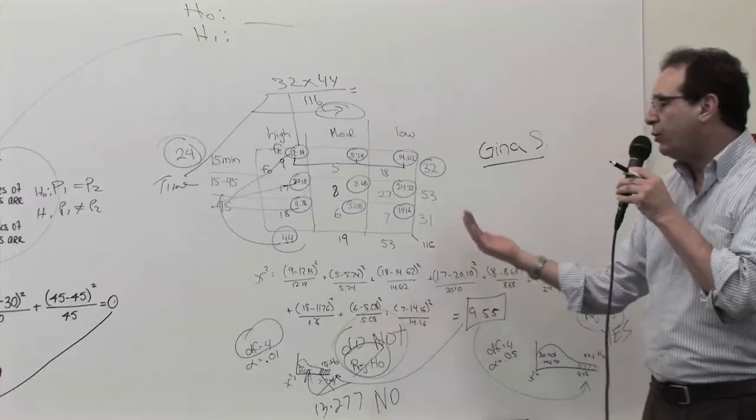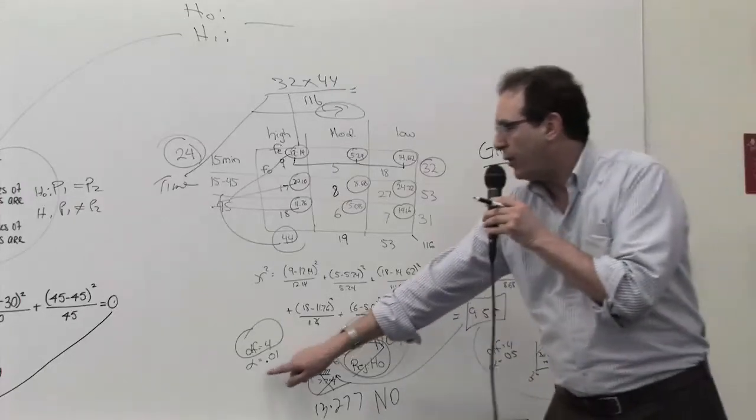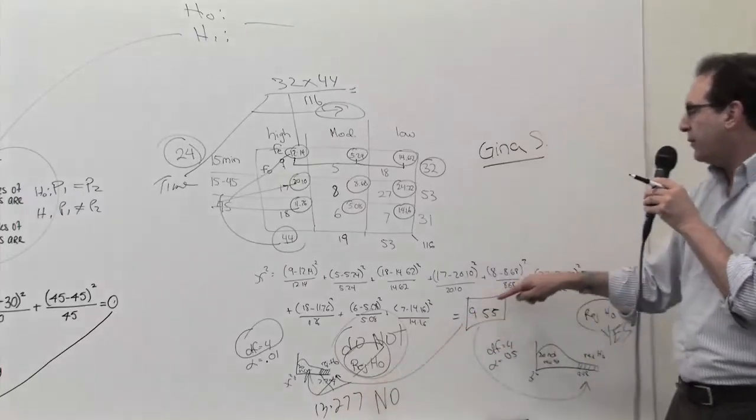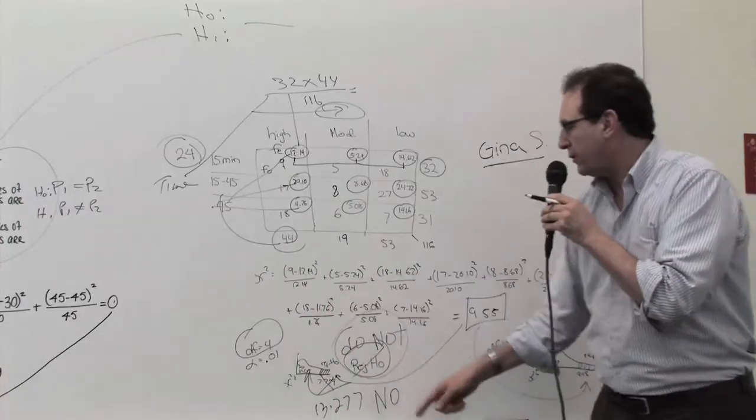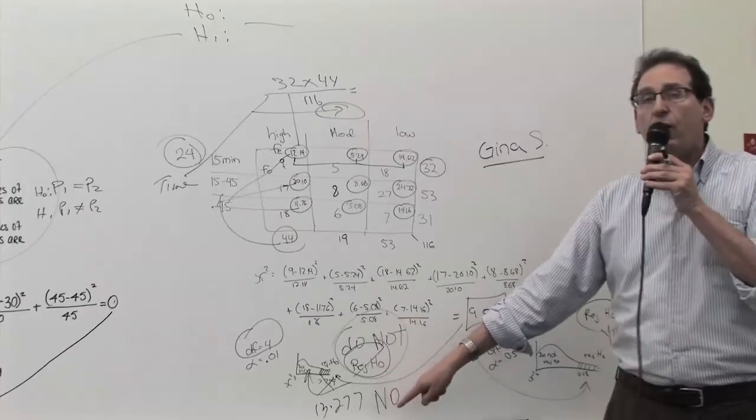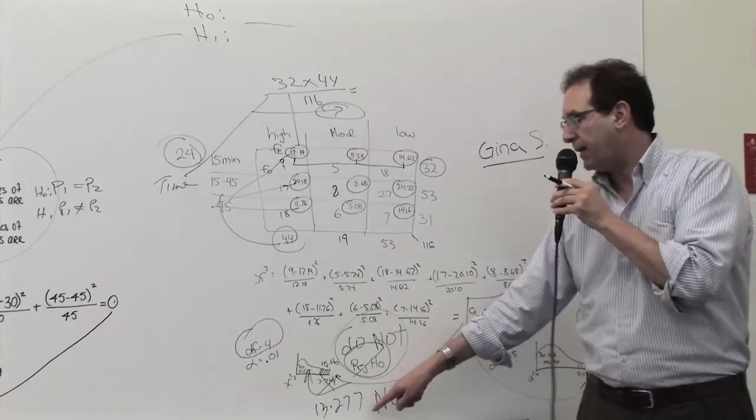And of course the book tells you to do it by two different alphas. At the 0.10, the critical point is 13.277. So in that case, since it's to the left of 13.277, the answer is do not reject H0. And no, there is no relationship between the two variables. They're independent.